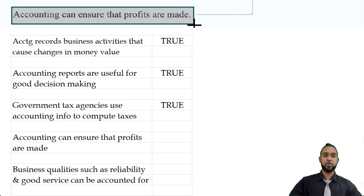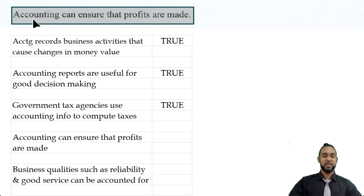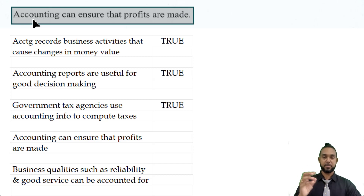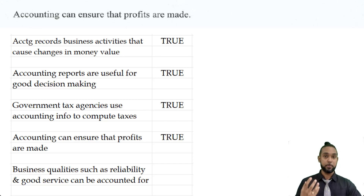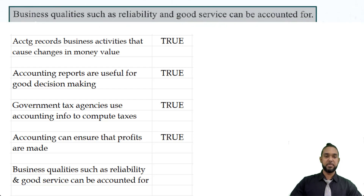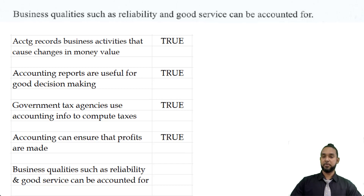Next we have that accounting can ensure that profits are made. I had a little bit of an issue with this one, but my problem is I tend to overthink things. How I interpreted this is that proper accounting can help us keep proper records and make sure that we make proper decisions about selling price, cost price, and other expenses. So I would put this as true — if you disagree, feel free to leave a comment. The final item says business qualities such as reliability and good service can be accounted for. No — it's very difficult and probably not totally accurate to put a dollar value on intangible qualities such as reliability and good service, so we're going to put false for that item.